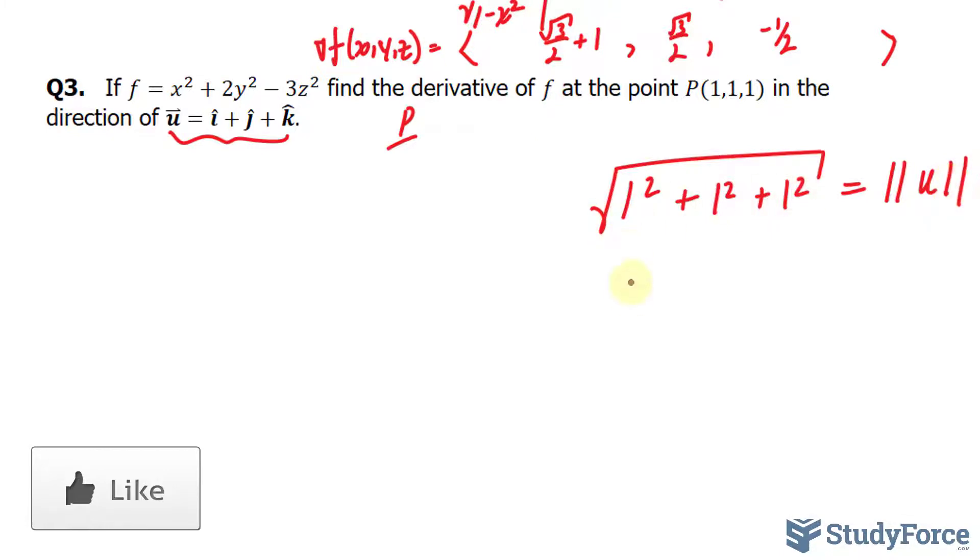And now, we should have the square root of 3, we'll take that as our denominator, and divide each of these by that. So 1 over square root of 3, 1 over square root of 3, and this represents our unit vector.